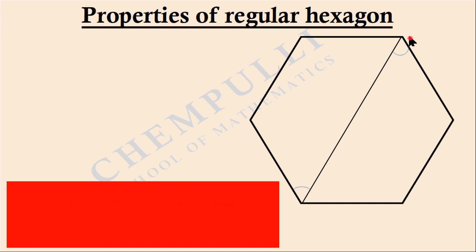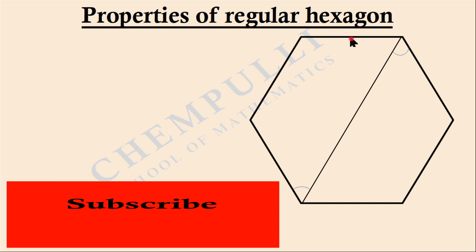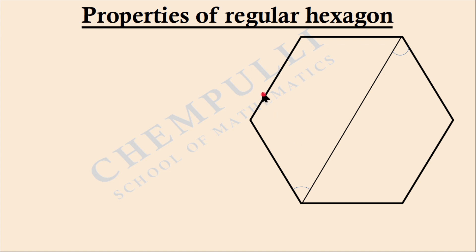Therefore, in a regular hexagon, all opposite sides are parallel. By applying the alternate interior angle property, we can show all three pairs of opposite sides are parallel and equal. These are the key properties of a regular hexagon. Thank you.